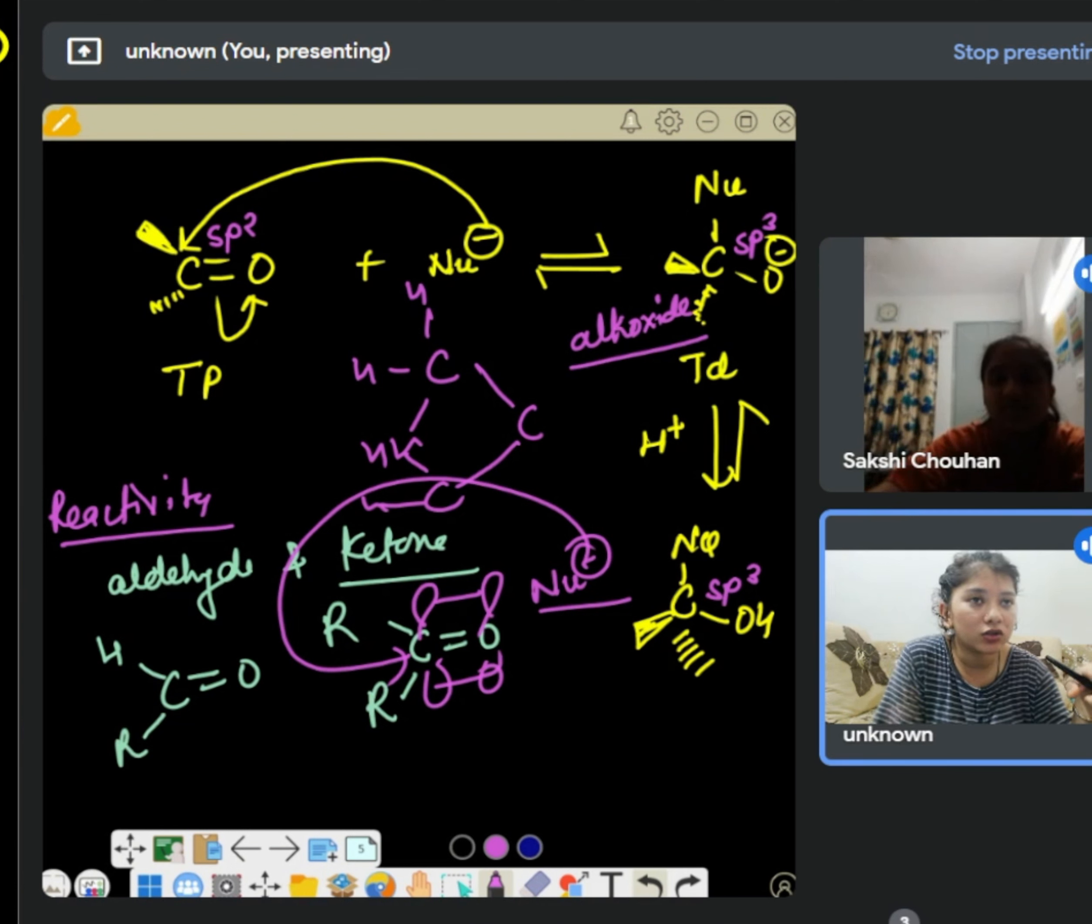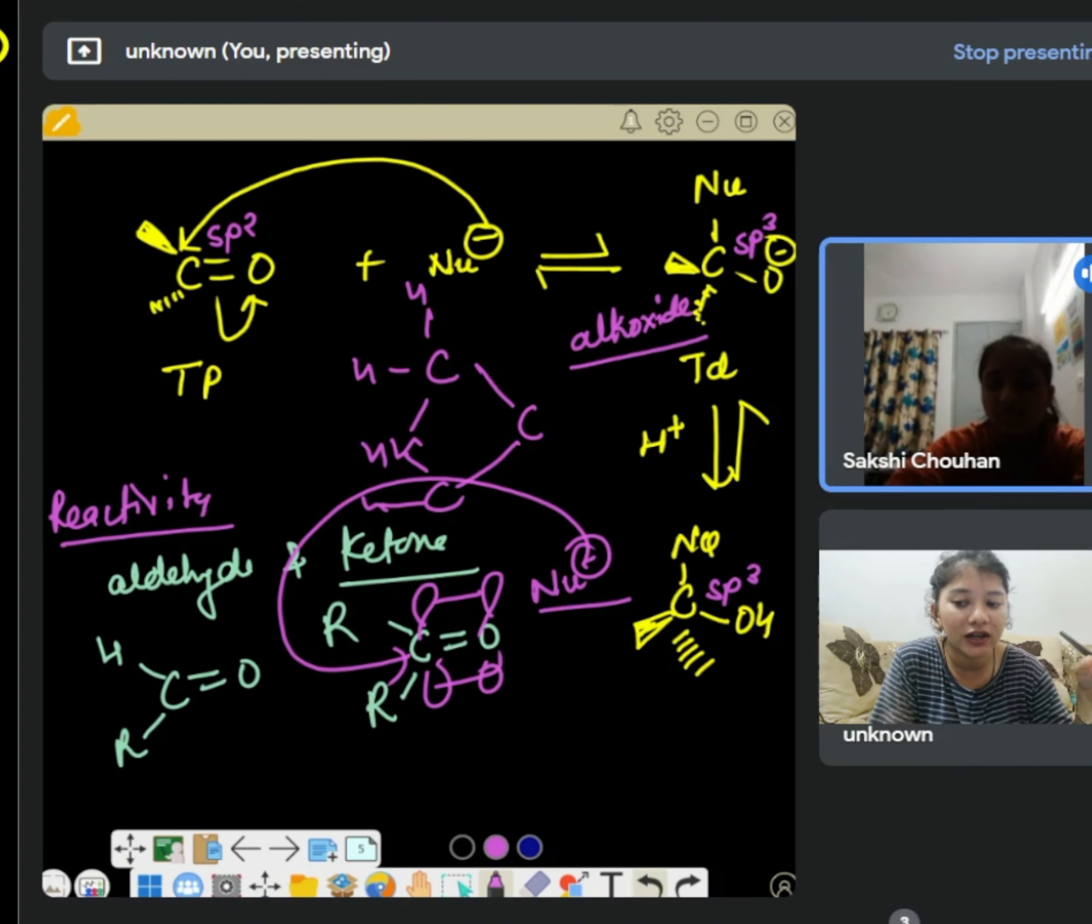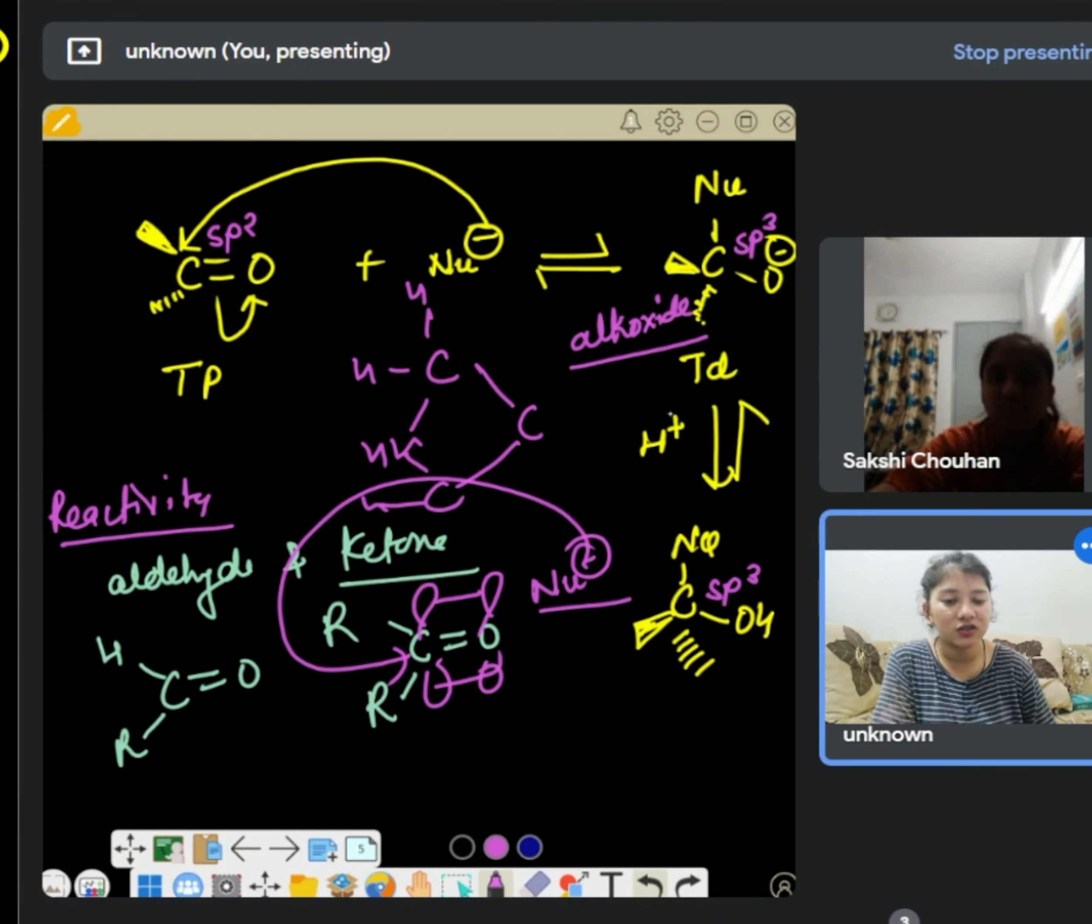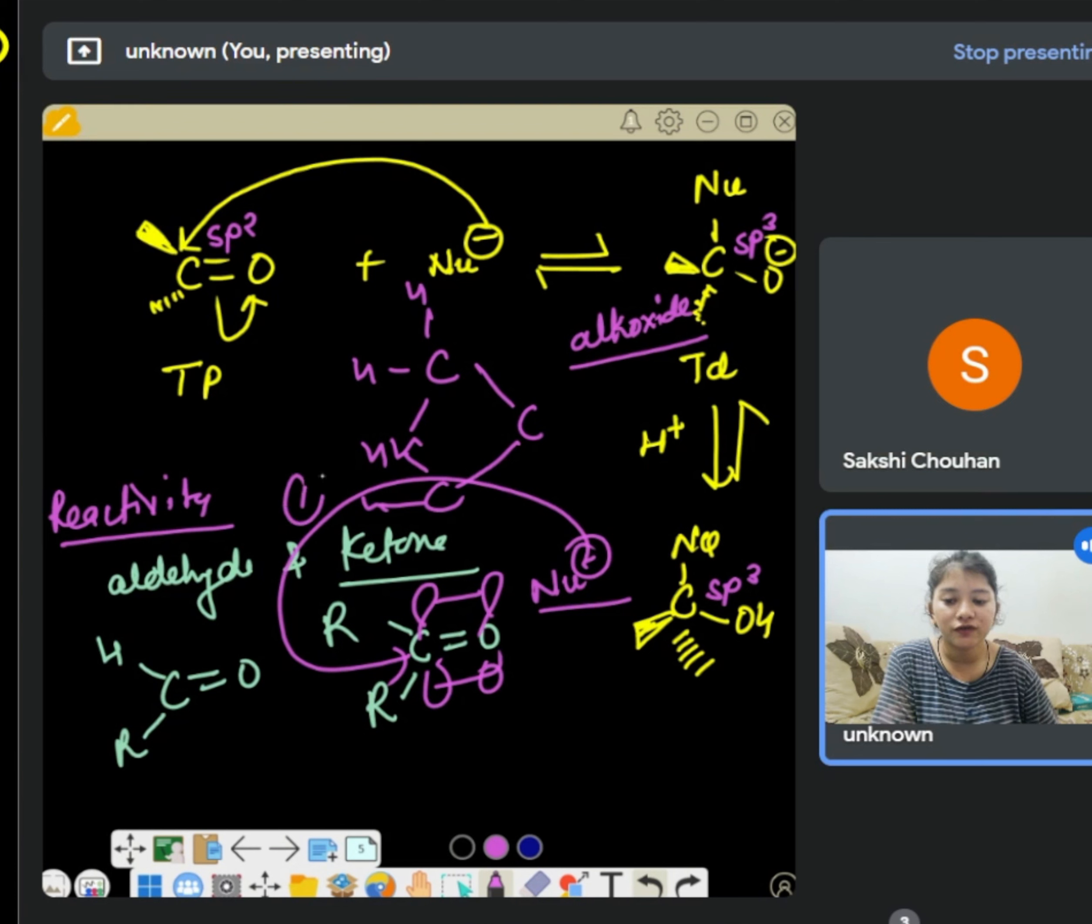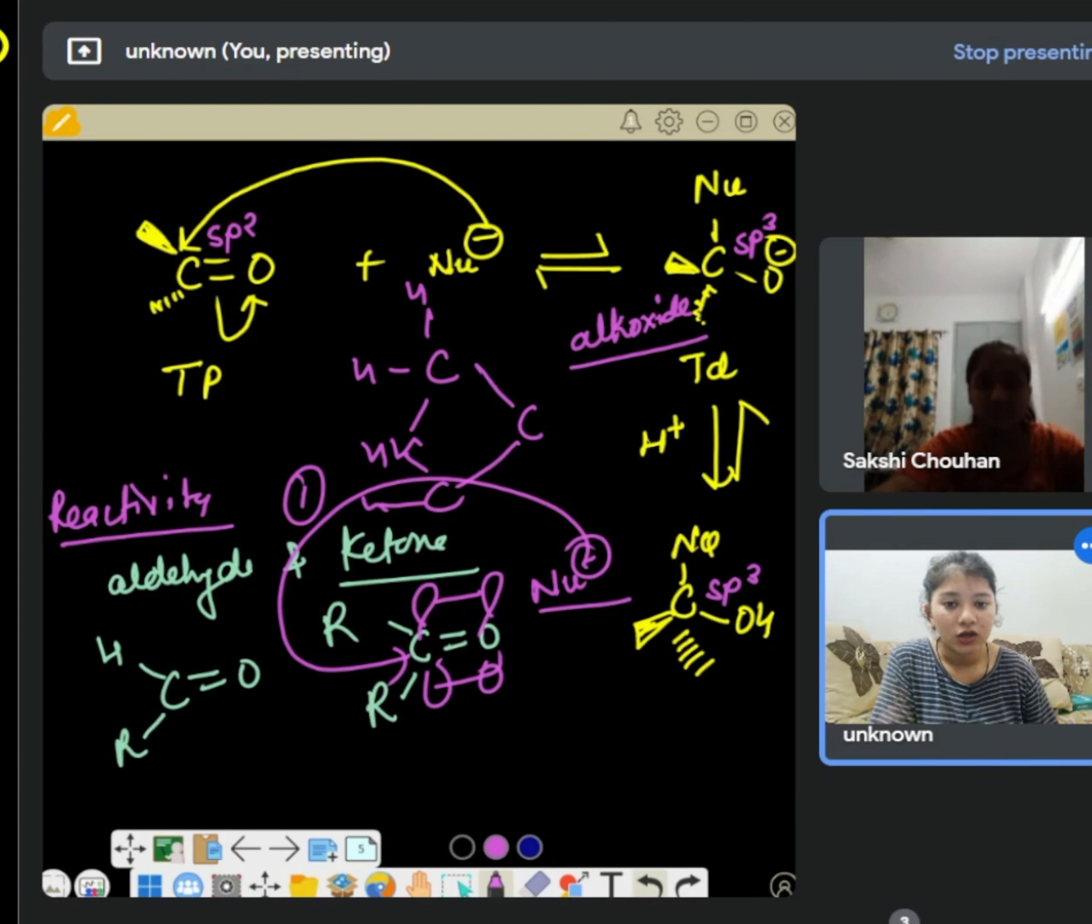This is the first factor, right? We can look at even more about the polarity of the case, right? If you look at the bond polarity of aldehyde and ketone, and if you remember, I have told you that the R-group is electron releasing, right?